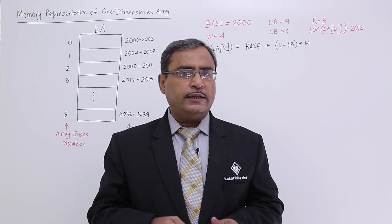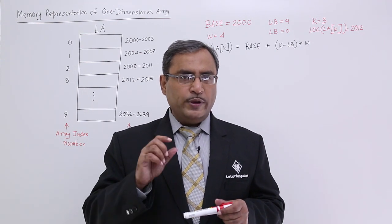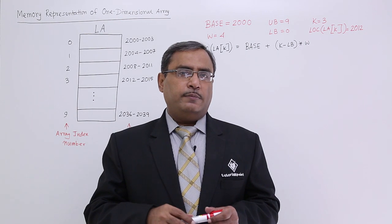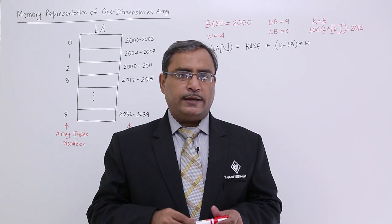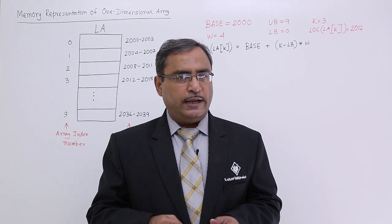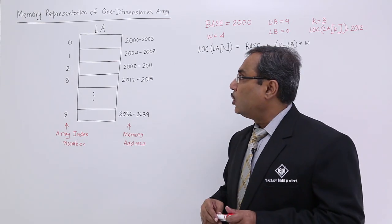They are not corresponding each other in that way. We should think about the width of each and every location inside the array. Because that width will be decided by the data type of the data which is going to be kept inside the array. Let us come for this diagram where we have explained a lot.